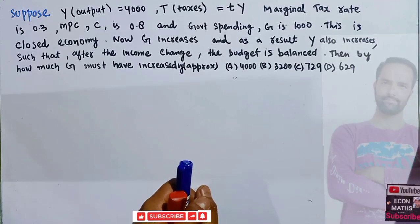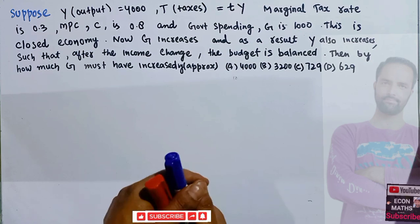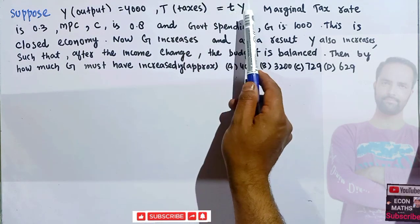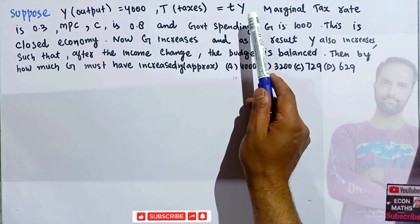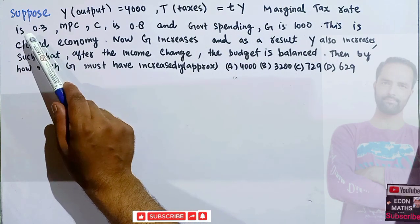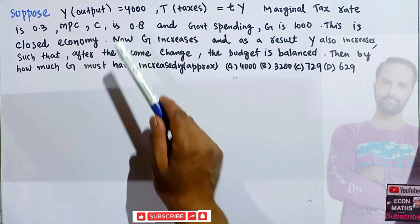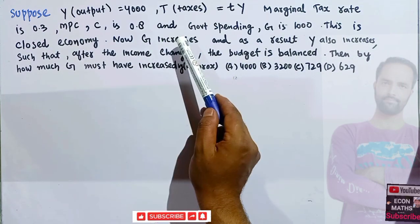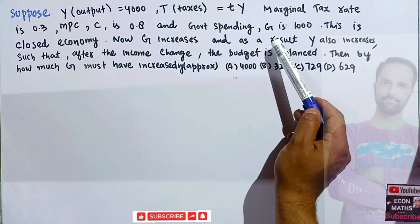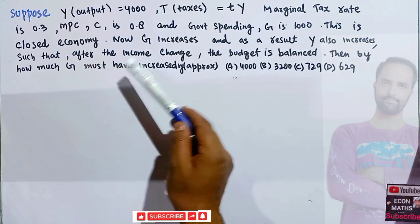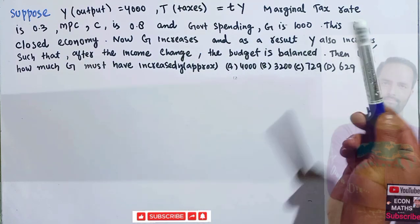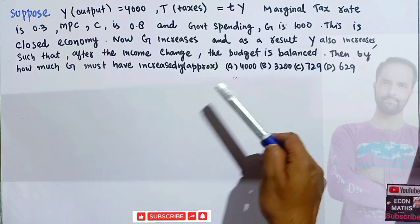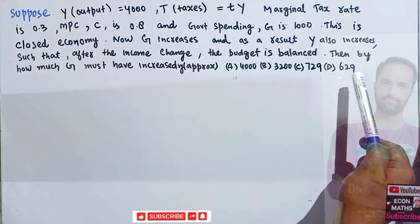In this video we will solve a problem on the income determination model. The question was asked on the Telegram channel of Econ Maths. Suppose output Y equals 4000, tax is given as tY where t is the marginal tax rate equal to 0.3, MPC (denoted by C) is 0.8, and government spending G is 1000. This is a closed economy. G increases, causing output to increase, such that after the income change the budget is exactly balanced. By how much must government spending have increased? The approximate options are 4000, 3200, 729, or 629.